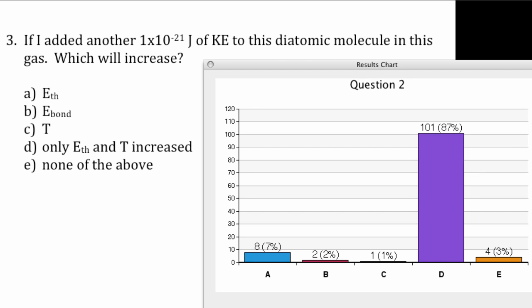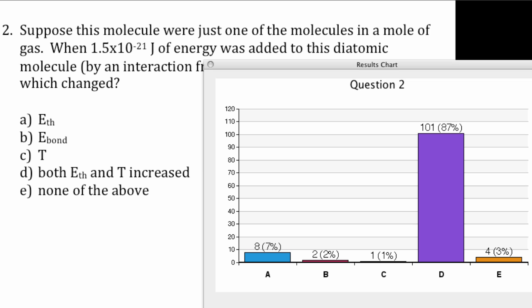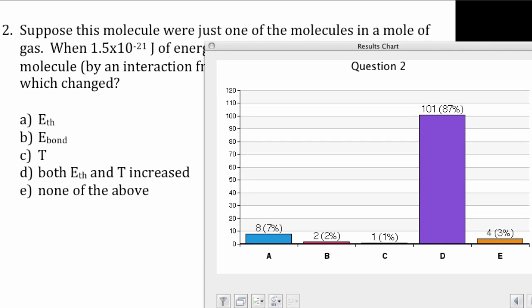Alright, so almost everybody's saying that e-thermal and the temperature went up. How do you know that bond energy didn't go up?